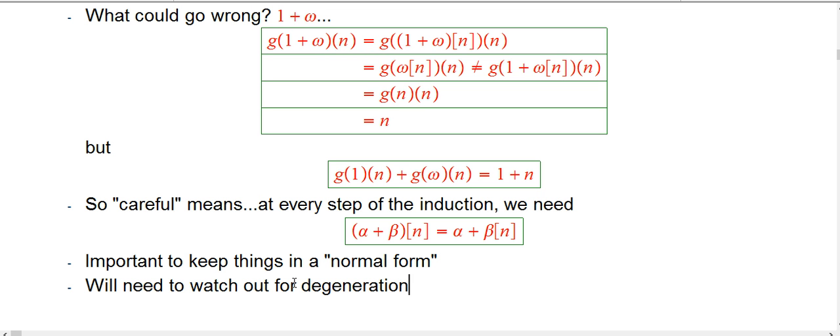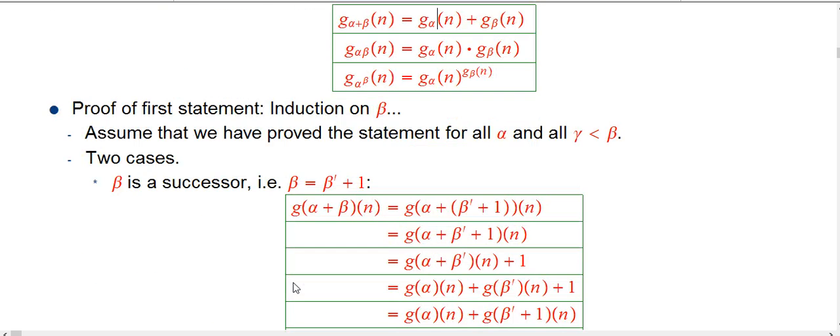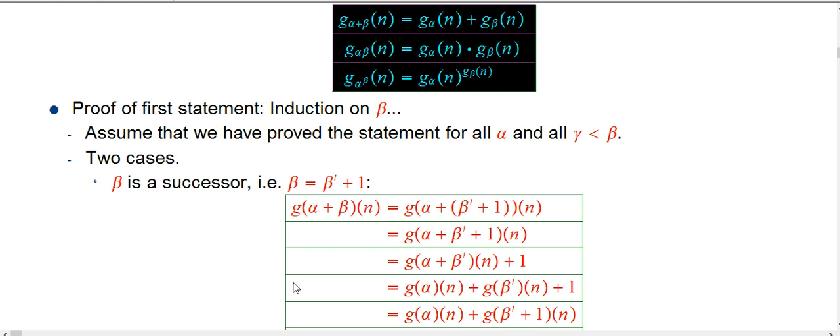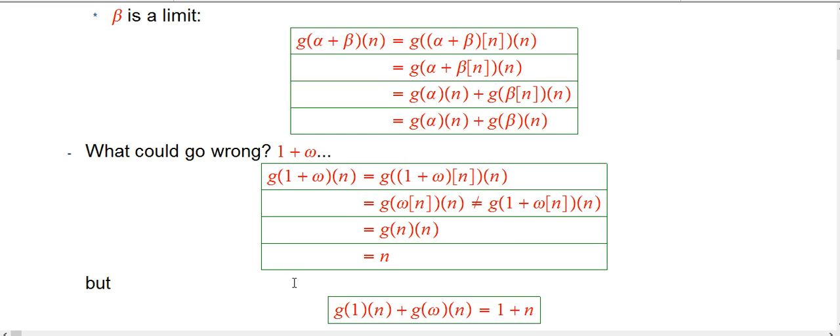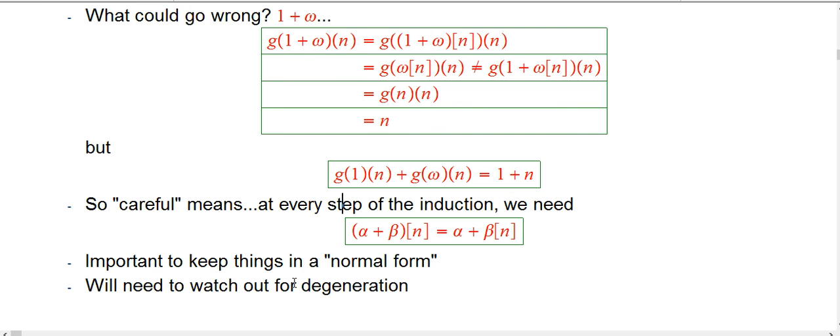It turns out that it doesn't kill us. The expressions we're going to be led to write down when we look at ordinal collapsing functions are exactly going to be things that are in a normal form. We'll have consistent rules for keeping things in a normal form, and so this won't screw us up. But I did want to advertise that you don't want to just assume. It is really dangerous and wrong to just say for every possible alpha and beta these rules are true. It's not that simple.